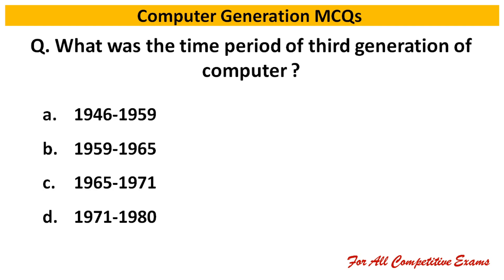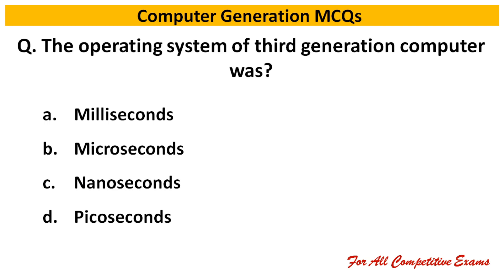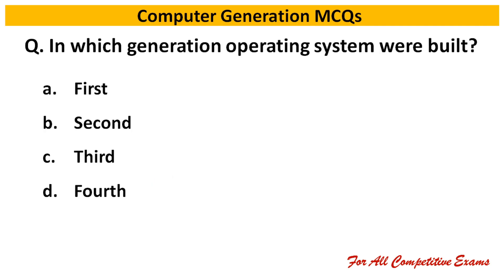Next question: What was the time period of third generation computers? Right answer is 1965 to 1971. Next question: The operating system speed of third generation computers was — Right answer is nanoseconds.